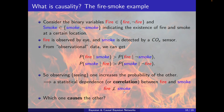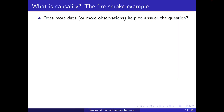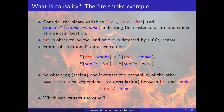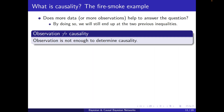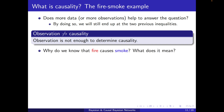But which one causes the other? Does it help if I make more observations or collect more data? No, because by doing so we still end up with the same two inequalities in terms of conditional probabilities. Fire and smoke are kind of identical in those expressions, and it's impossible to distinguish between them. In general, observation is insufficient to determine causality.